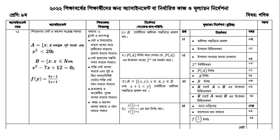A is equal to x such that x is equal to 0, and f of y is equal to 4y minus 1, and 3y plus 1. So this is a function.